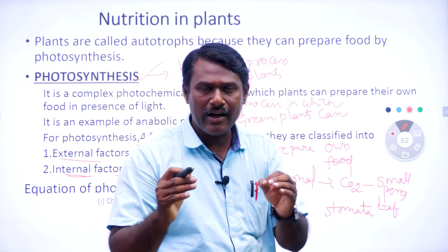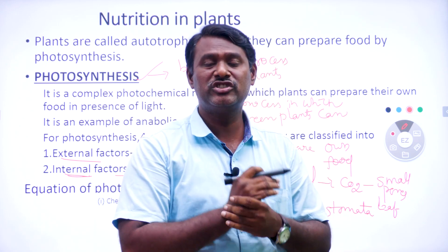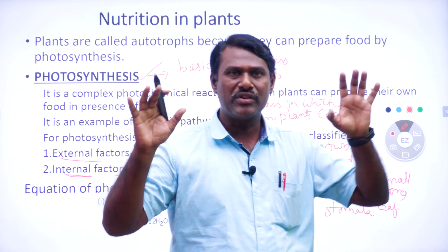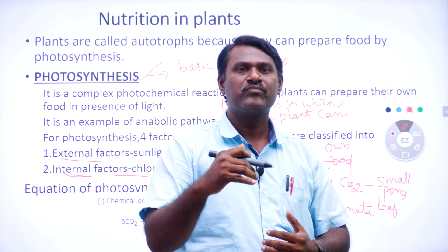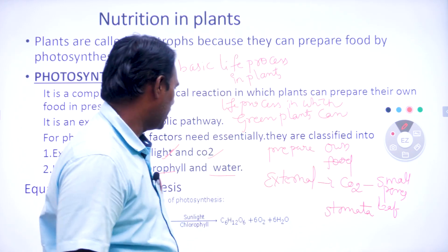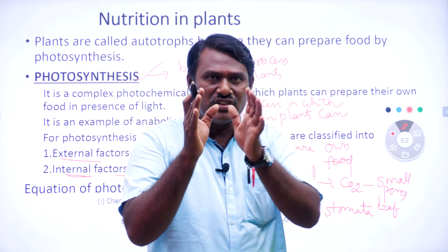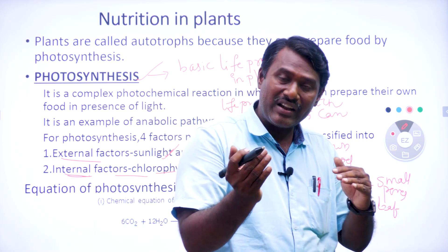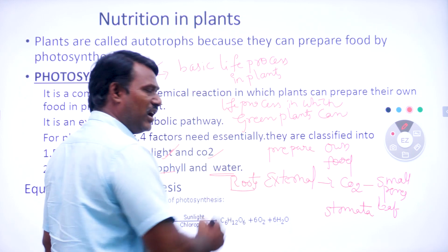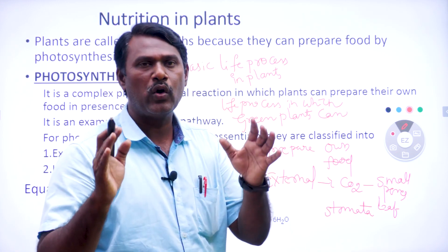For internal factors — chlorophyll and water. Chlorophyll is the green colour pigment present in the chloroplast of the leaf. Within the chloroplast, chlorophyll is the essential pigment, and it is mainly useful in the photosynthesis process. Water is one of the essential factors required for photosynthesis, and this water has been taken by the plant through its roots.